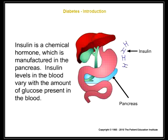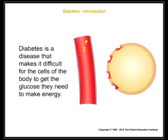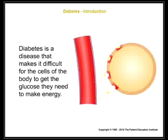Insulin is a chemical hormone which is manufactured in the pancreas. Insulin levels in the blood vary with the amount of glucose present in the blood. Diabetes is a disease that makes it difficult for the cells of the body to get the glucose they need to make energy.